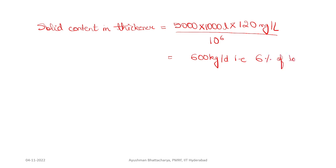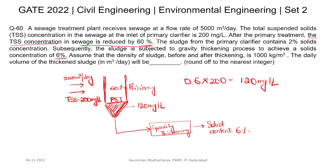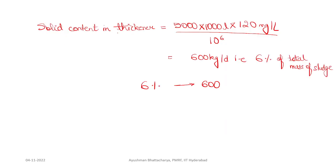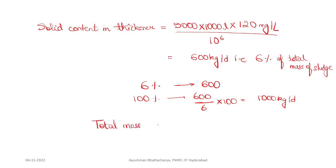That 600 kg per day is 6% of the total mass of sludge — because the question states the gravity thickening achieves a solid concentration of 6%. So if 6% of the total sludge mass is 600 kg, then total mass of sludge = 600 ÷ 6 × 100 = 10,000 kg per day.